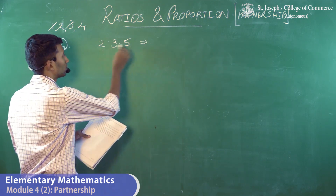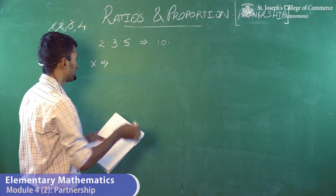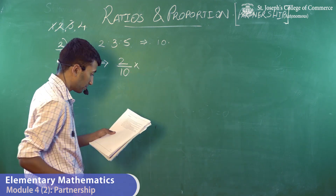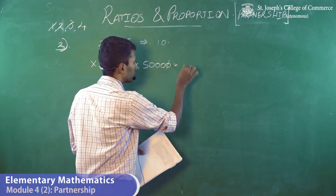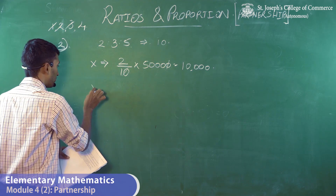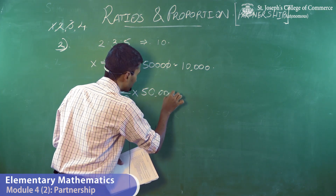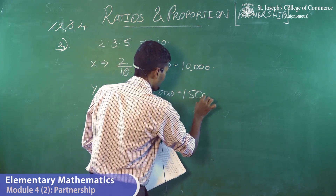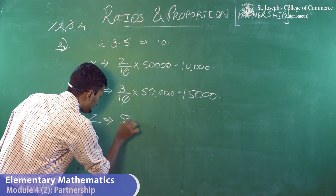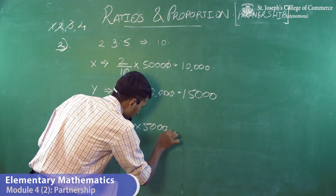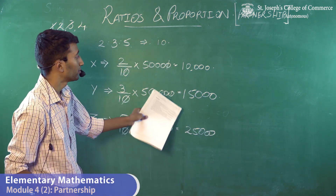Since the ratio is 2:3:5, adding them up gives 10 total parts. X has invested 2 parts out of 10, so X receives two-tenths of 50,000, which is 10,000. Y has invested 3 parts, so Y gets three-tenths of 50,000, which is 15,000. Z receives 5 parts out of 10, so Z gets five-tenths of 50,000, which is 25,000. Adding them up gives 50,000.